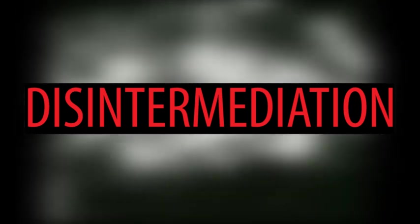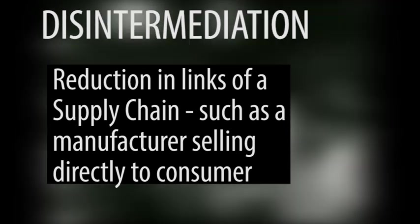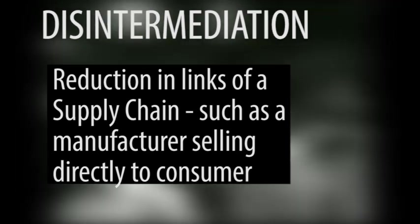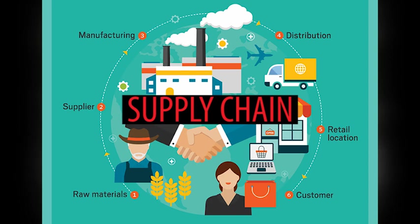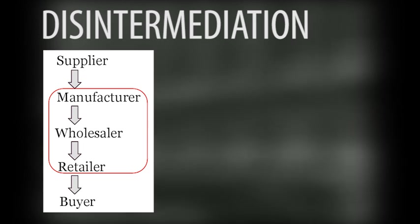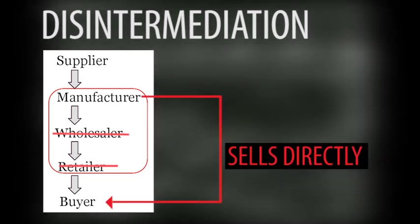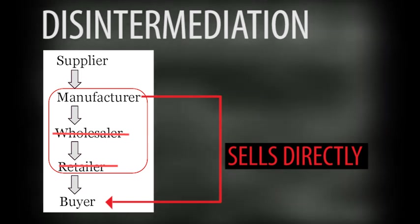So what is disintermediation? The disintermediation process is a concept from the study of supply chain economics. A supply chain is basically the network of parties involved in taking a product from a supplier to a customer. For any product in any market, the supply chain starts with the raw materials supplied to a manufacturer, distributed to a wholesaler and/or retailer, before being purchased by a customer. Disintermediation simply means the removal or consolidation of one or multiple parts of the supply chain — cutting out the middleman.